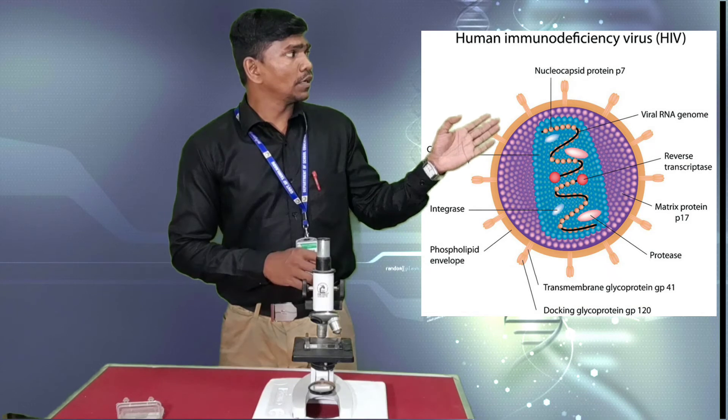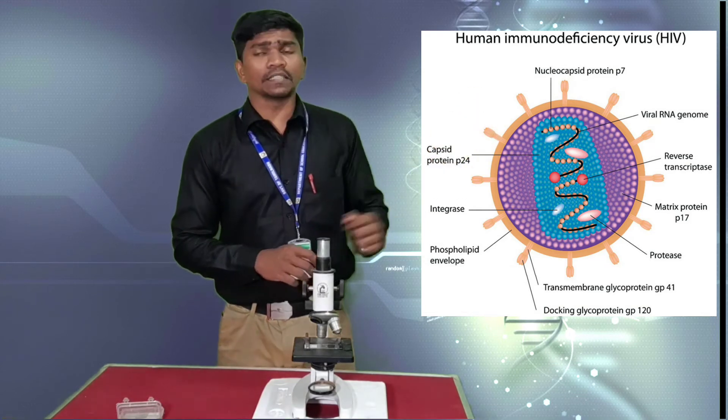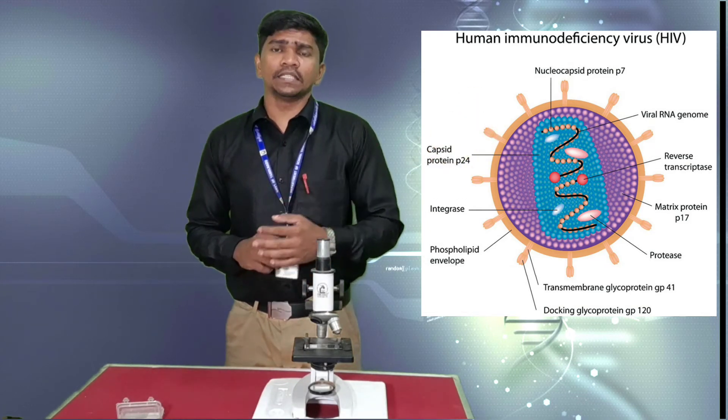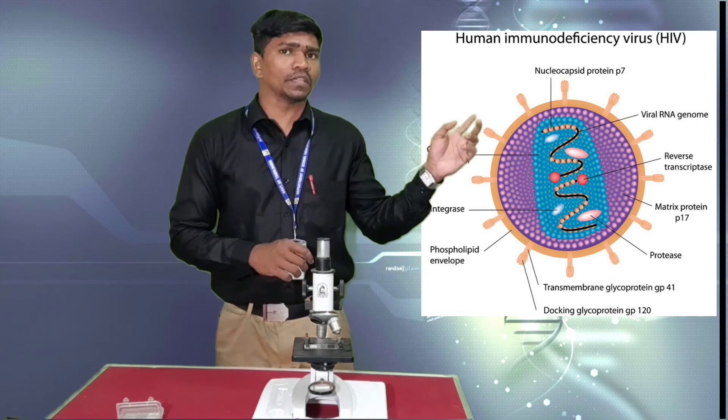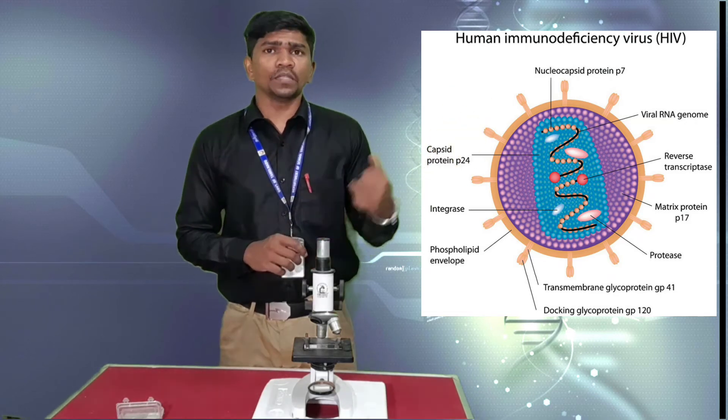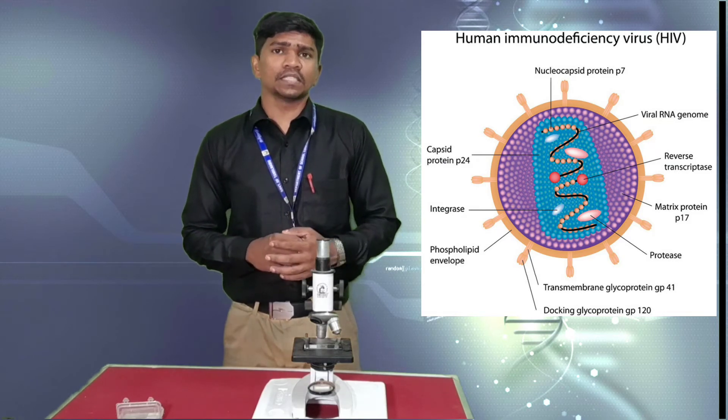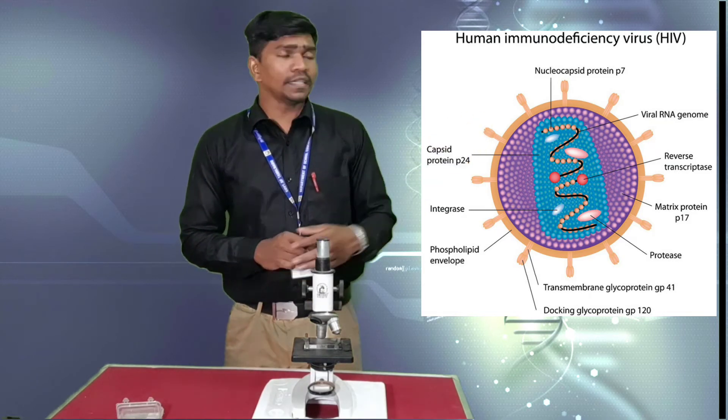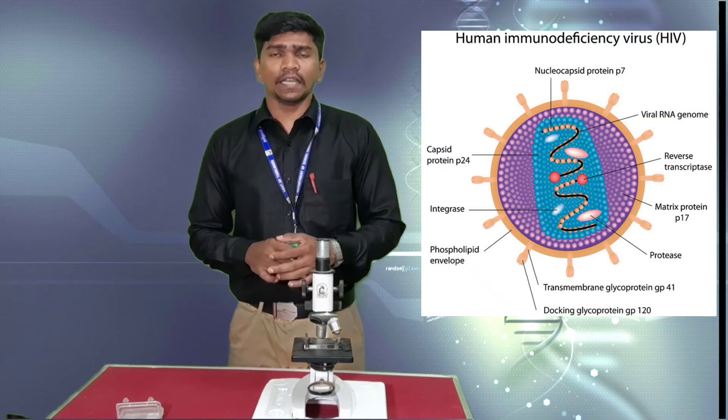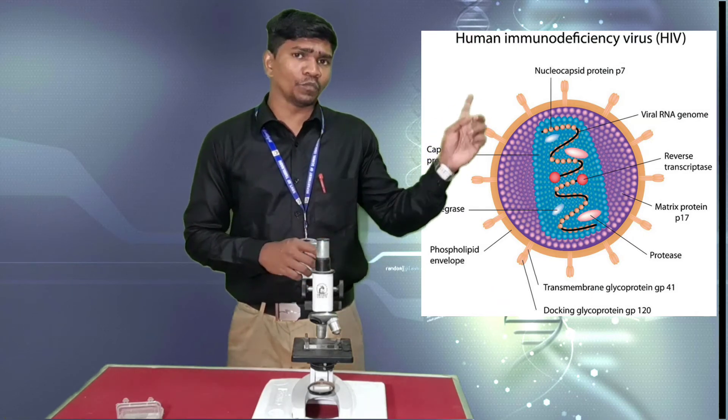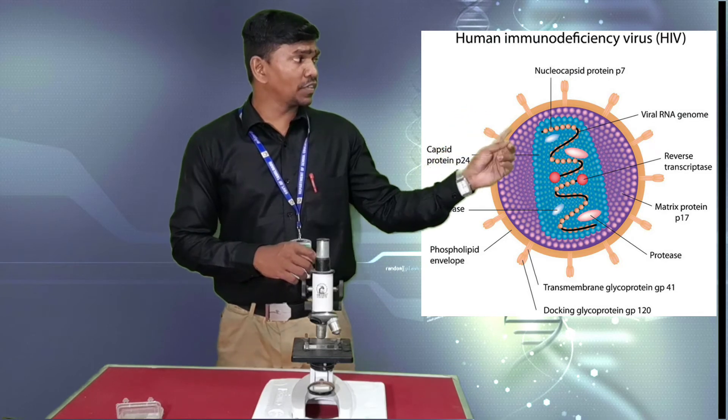It is a spherical shape, which is having a double helix RNA. As we have DNA as a genetic material, but this HIV has RNA as a genetic material. Same thing, it has an enzyme called reverse transcriptase. Like that you have to draw the diagram and label the parts.